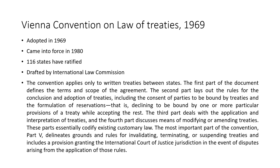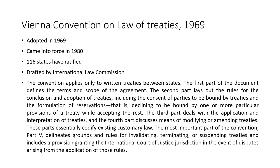The convention applies only to written treaties between states. The first part of the document defines the terms and scope of the agreement. When we discussed sources of international law, it said international conventions recognized by the states — once recognized, either through signature, accession, ratification, or acceptance, it becomes legally binding upon that state. The convention applies only to written treaties between states because it has to be expressly accepted, as stated in Article 38 of the ICJ Statute.